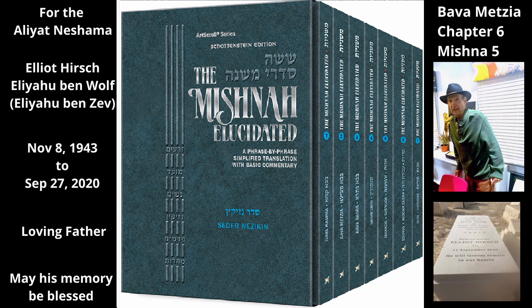Similarly, if he agreed to carry a certain amount of grain on the donkey, but instead carries straw — and because straw is lighter than grain, he adds to the load — even though the larger load of straw weighs the same as the grain would have weighed, if the donkey becomes injured, the renter is obligated to pay for the damage.